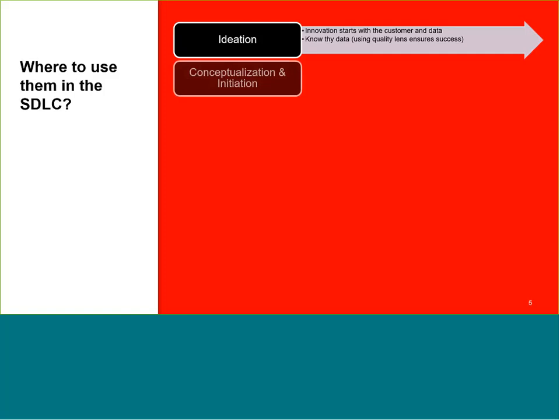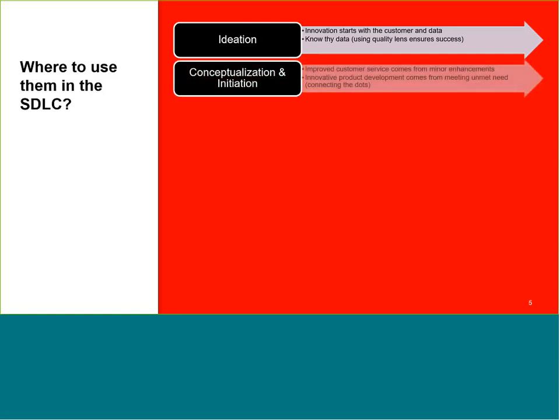The next phase is conceptualization and initiation. It's about improving customer service. Depending on whether you're in a slower-moving industry like insurance, the customer service aspect is of critical importance. How you better serve that customer comes down to the data you have about them and their transactions, so that you treat them the way they expect to be treated. Innovative products need to connect the dots, so understanding your quality up front at the beginning of a project is so, so important. Dimensions of data quality offer that to you.